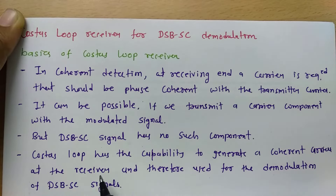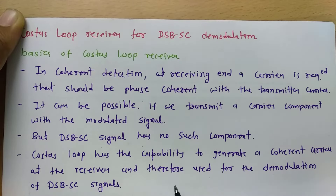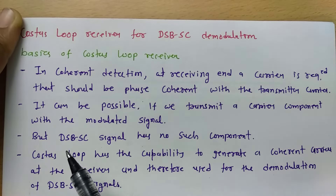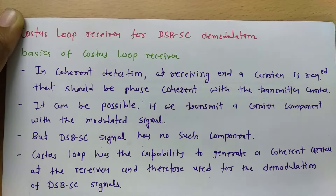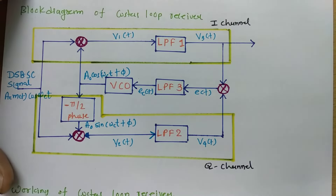In the Costas loop, it has the capability to generate a coherent carrier at the receiver, and therefore demodulation of the DSBSC signal is possible. I will explain how we can generate a carrier signal that is coherent with the received signal and how we will demodulate that signal — that is what this complete session will cover.